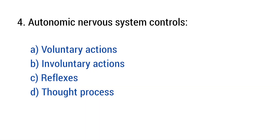Question number four. Autonomic neural system controls. The right answer is option B: Involuntary actions.